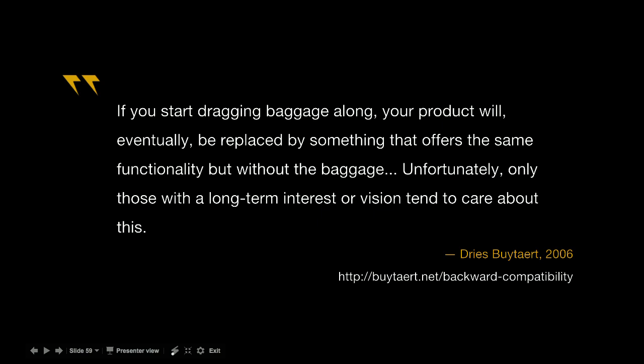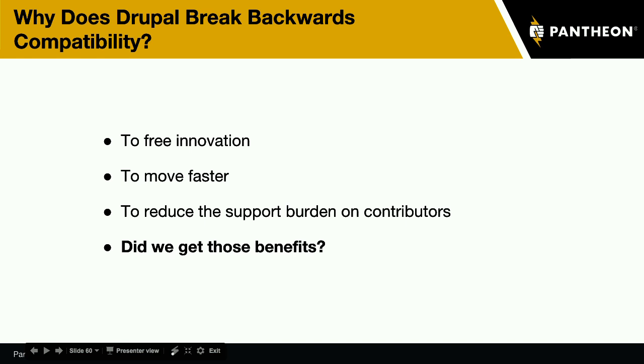If we were to change that diagram to show what percentage of sites are running the latest version of Drupal or WordPress, the discrepancy would be even bigger — because any WordPress site built in the last 10 or 15 years can just keep upgrading all the way to the latest WordPress core with no problem. That's not true of Drupal. We've gotten some of these benefits, but we've also been reducing the support burden of maintaining Drupal 5 and 6 by simply stopping support for those sites at a certain point.